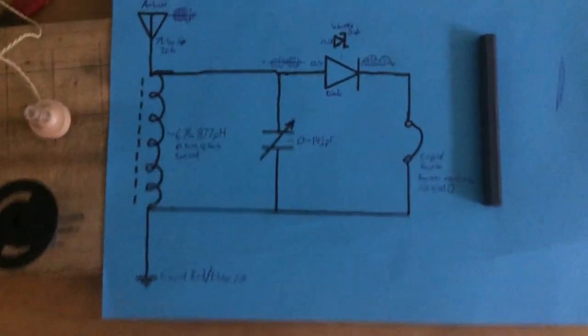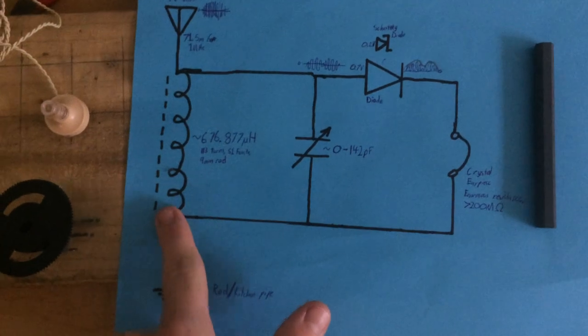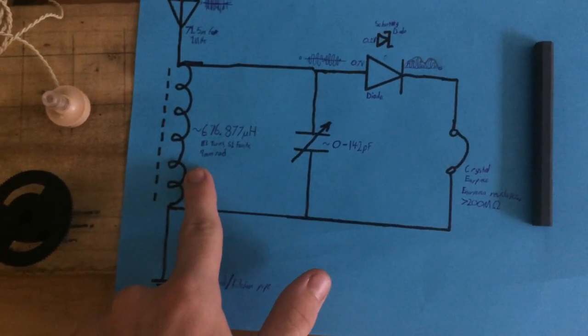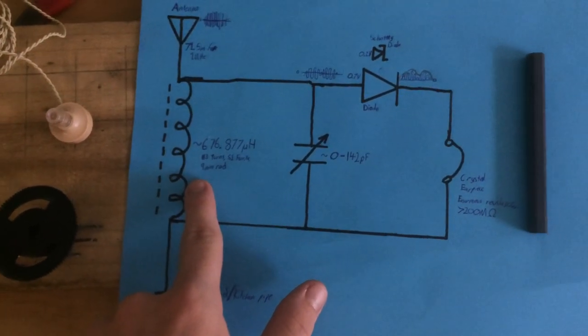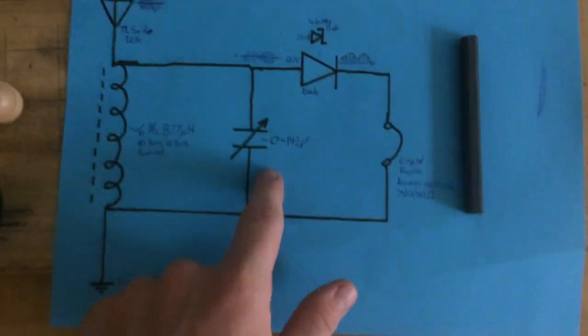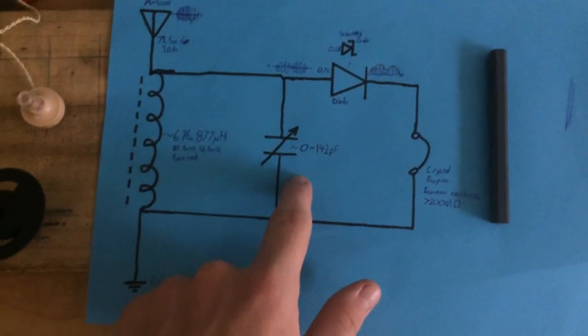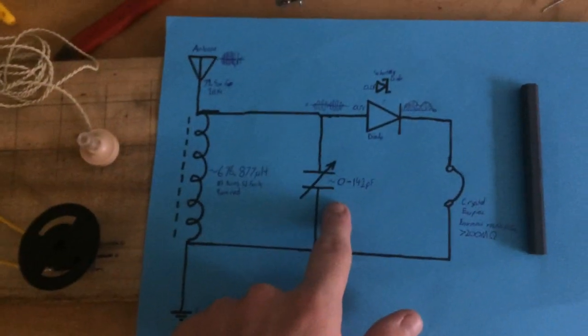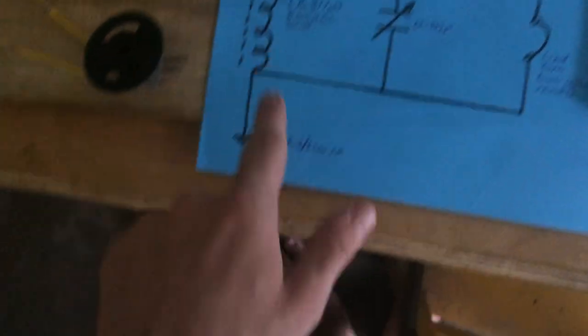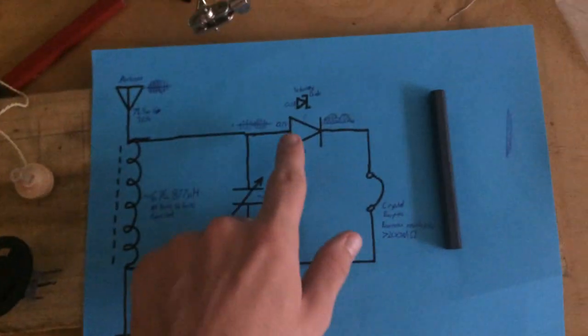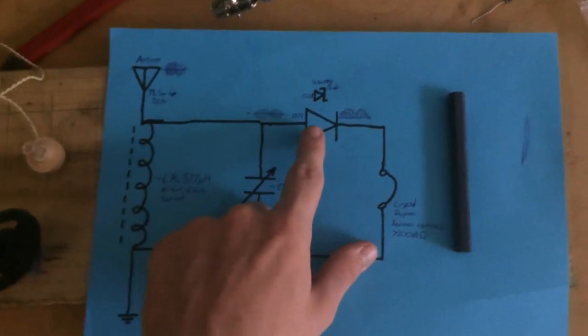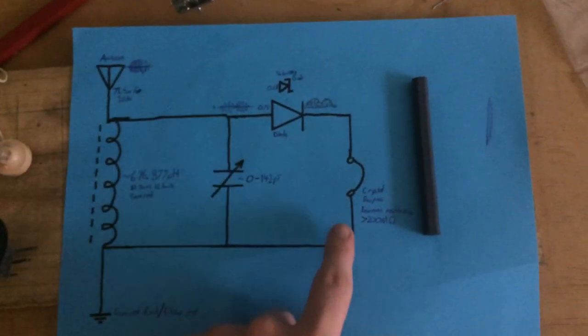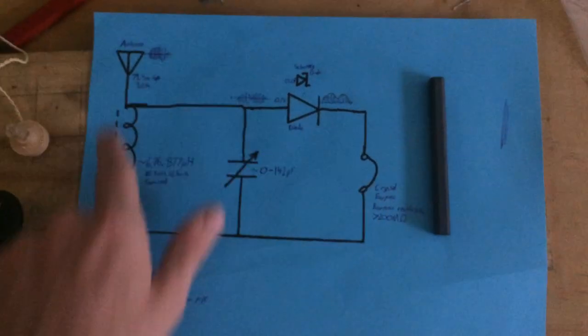And so this is the circuit diagram for it. You can see this is the inductor, which is about 676 microhenries. This tuning capacitor on the datasheet says that it should go from 0 to 142 picofarads. I've got an antenna and ground, which you can't see because I don't have it hooked up. I've got a diode and a crystal earpiece, and this is how it's all connected up.